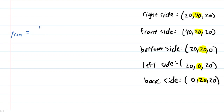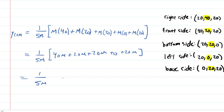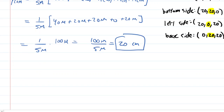Now we do a similar calculation for the Y-coordinate. We start with 1 over the total mass of 5m and look at the Y-coordinates. For the right side: m times 40. The front side: m times 20, and continuing in that pattern. Adding the m terms inside the brackets gives 100m. So we get 100m over 5m, which simplifies to 20 centimeters — the Y-coordinate of the center of mass.